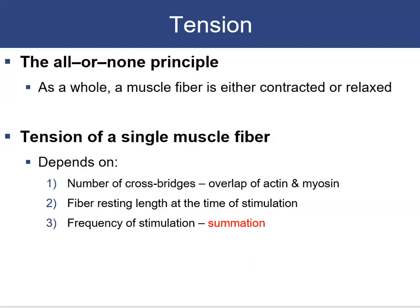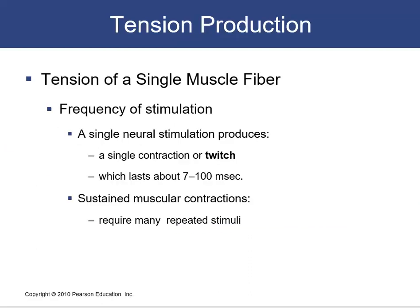Tension also depends on frequency of stimulation — known as summation — which affects the internal calcium concentration and the amount of calcium bound to troponin. A single neurostimulation produces one contraction called a twitch, lasting between 7 and 100 milliseconds depending on the fiber. Sustained muscular contractions require repeated stimuli.